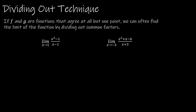One technique we can use is called the dividing out technique, and it is helpful when we have a rational function — remember, a rational function just means you have a function with a fraction. It's helpful when we know that f and g are functions that agree at all but one point.